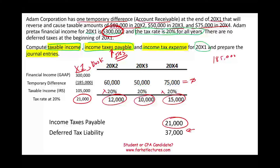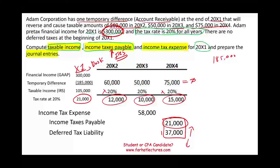Income tax expense is computed as income taxes payable plus any increase in deferred tax liability. Since our liability is increasing, income tax expense equals $21,000 plus $37,000 = $58,000. Sometimes the deferred tax liability goes up, sometimes it goes down, and sometimes you'll have a deferred tax asset — we'll cover those scenarios later. Visit FarhatLectures for additional MCQs and true/false questions to help with your courses and CPA or CMA exam. Good luck, study hard, and invest in yourself.